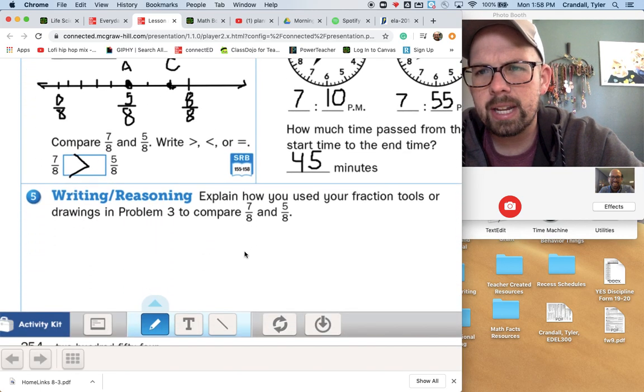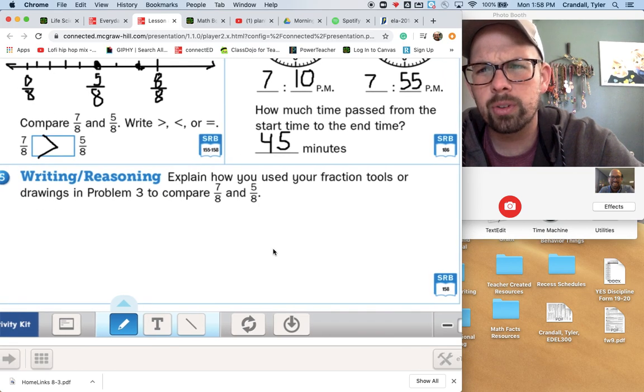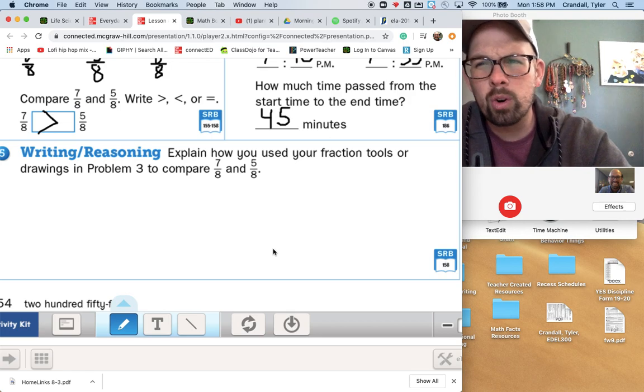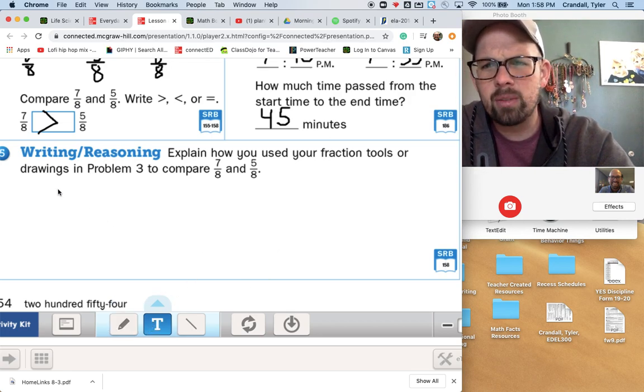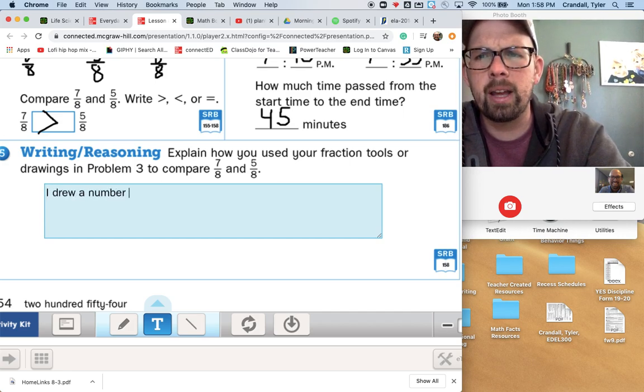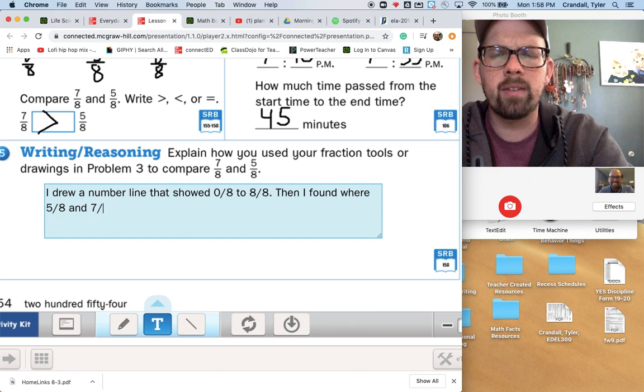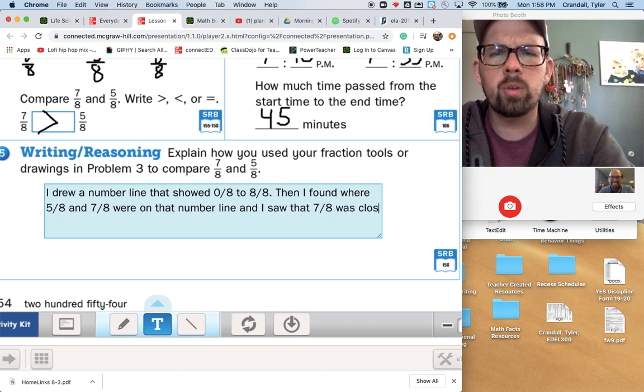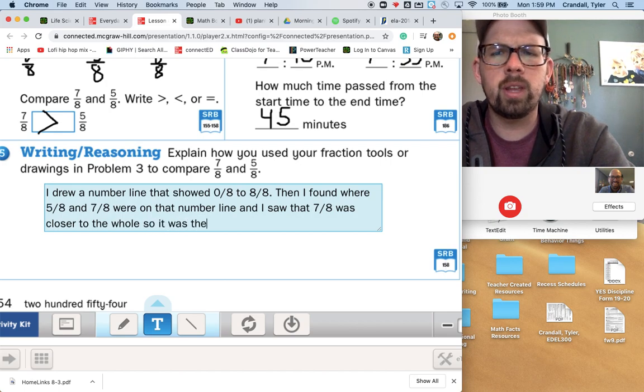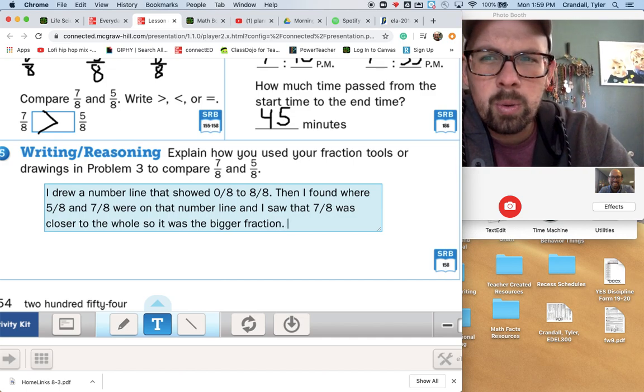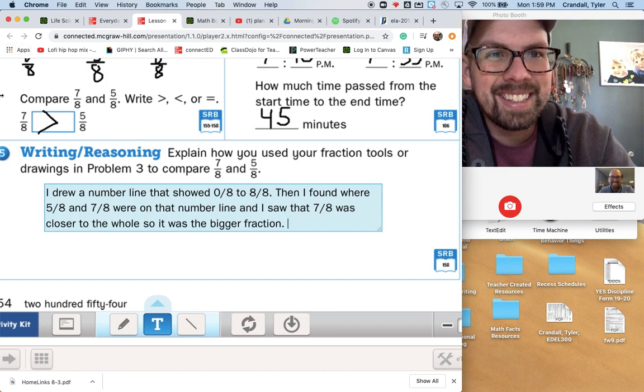Question 5 says, writing and reasoning, explain how you used your fraction tools or drawings in problem 3 to compare 7/8 and 5/8. Well, we ended up using a number line. So I'm going to say I drew a number line that showed 0/8 to 8/8. Then I found where 5/8 and 7/8 were on that number line. And I saw that 7/8 was closer to the whole. So it was the bigger fraction. So that's how I would explain it. If you would explain it another way, go ahead and write that up. And thanks a lot. Bye.